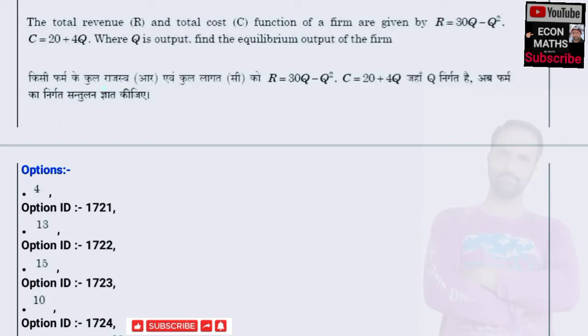In this video we will solve a numerical problem that was asked in NET Economics paper of 2022. The question is: the total revenue and total cost functions of a firm are given as R = 30Q - Q² and C = 20 + 4Q, where Q denotes the output. Find the equilibrium output of the firm.